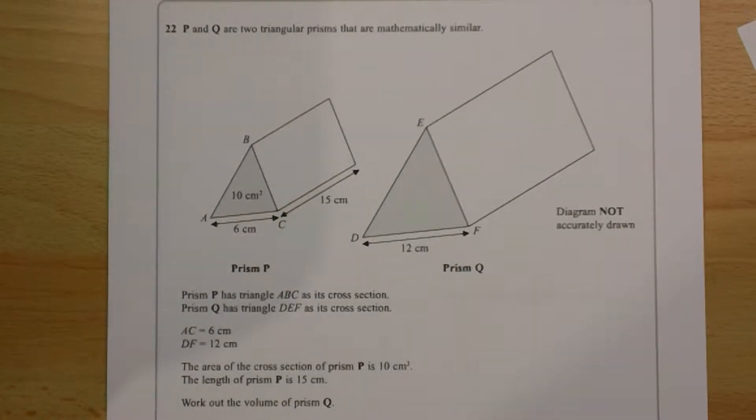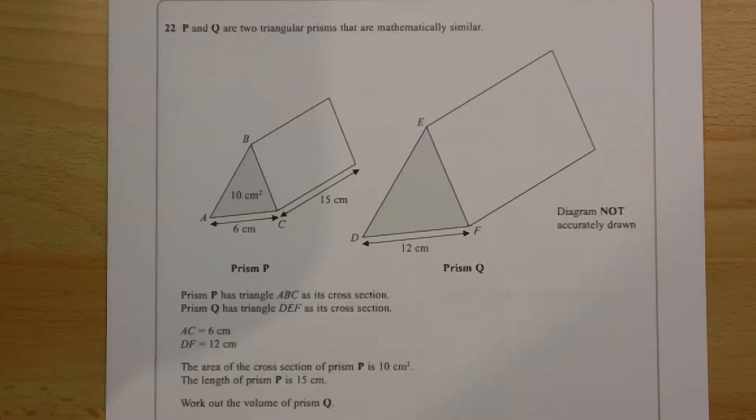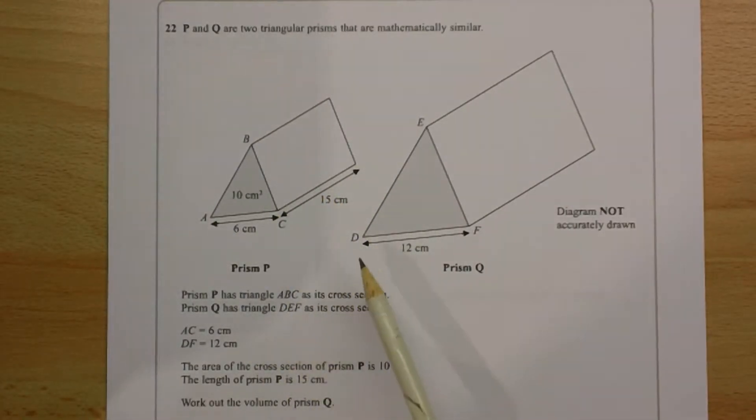Question 22. This is similar shapes. P is 6 long here and 15 long here. D is 12 long here.